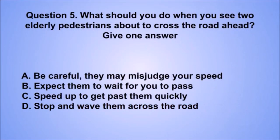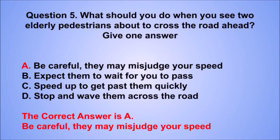Question 5. What should you do when you see two elderly pedestrians about to cross the road ahead? The correct answer is A: Be careful, they may misjudge your speed.